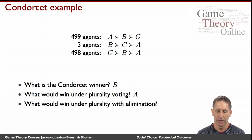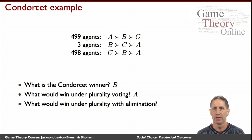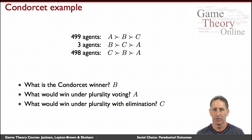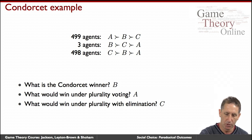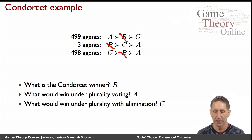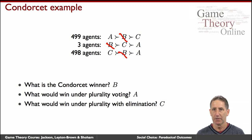What about plurality with elimination? You might want to pause the video here. When you think about it, you see that C would be the winner under plurality with elimination. Why? You'd first run a plurality and B would be the loser, so B would leave the competition. Then it would be head-to-head between C and A, and C would be the winner because 501 of the thousand agents prefer C to A. So two voting schemes, both reasonable on the face of it, give different answers — both different from the Condorcet condition.